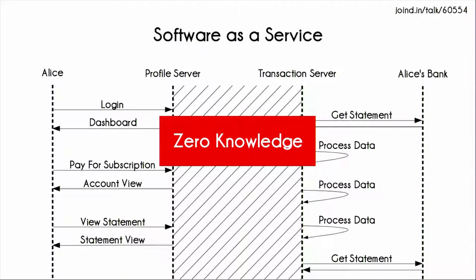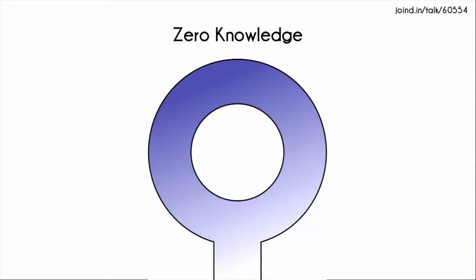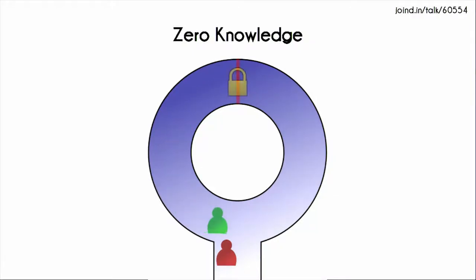I want to implement some kind of zero knowledge. Zero knowledge is a bit of a strange word - my definition is basically the ability to prove that you know a truth without sharing the truth. Imagine you have a corridor with a loop, and at the end of that corridor is a door locked with some kind of test. A green and a red character come along, and green wants to prove to red that green knows the answer to the test without telling red what the test is. Red knows that if green goes around one side of the corridor and comes back to the other side, green knows the truth - but red still doesn't know the truth.